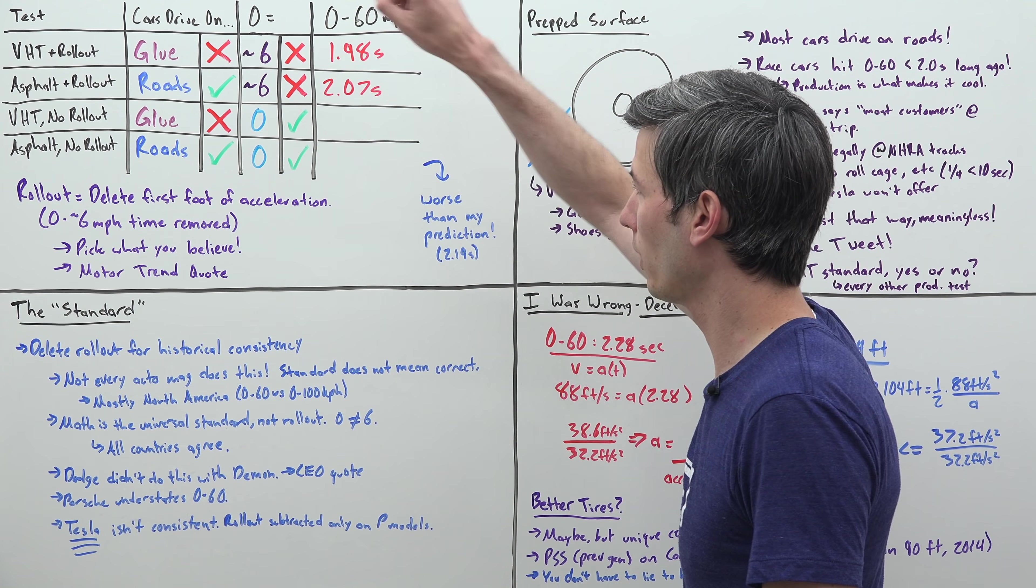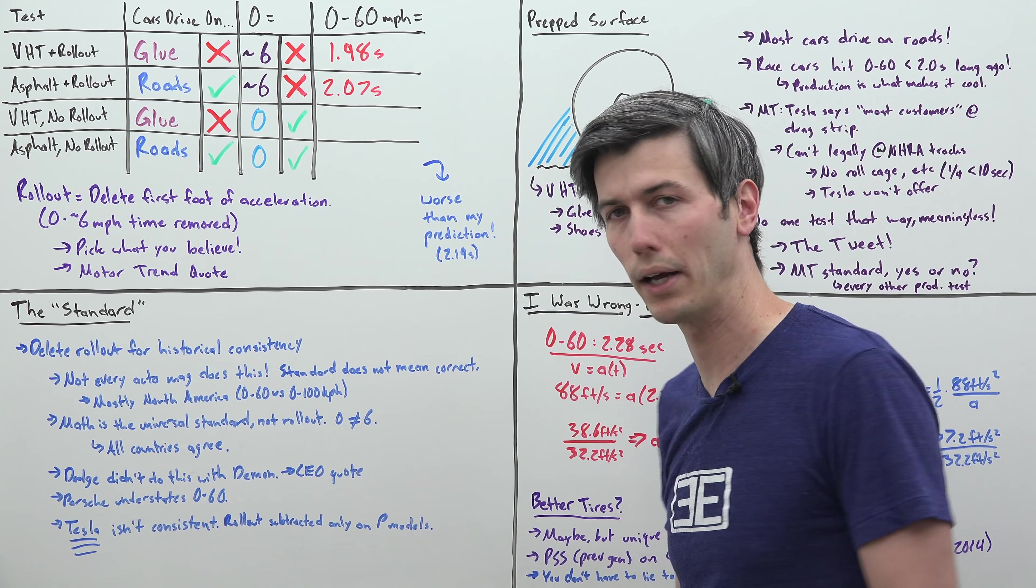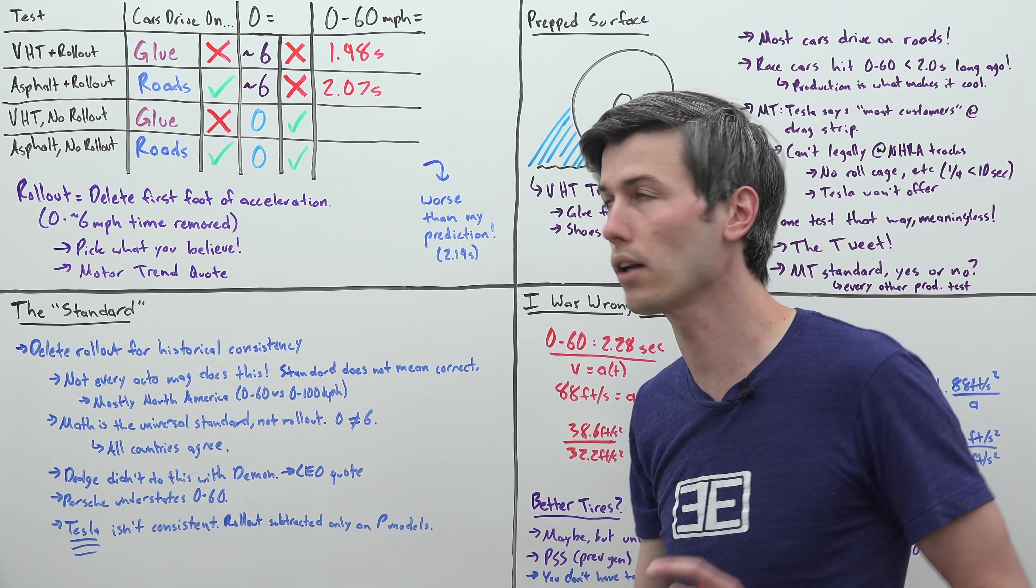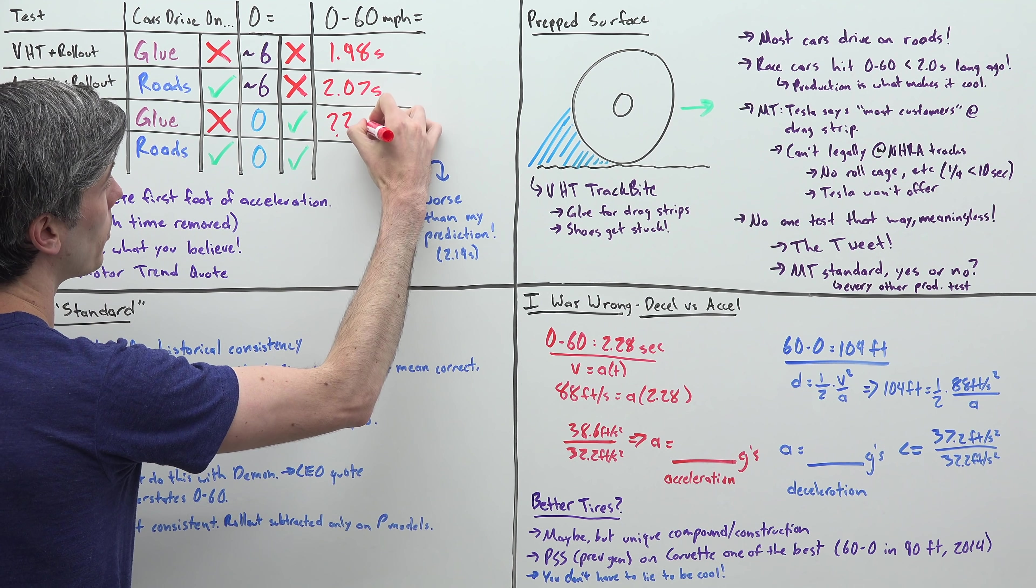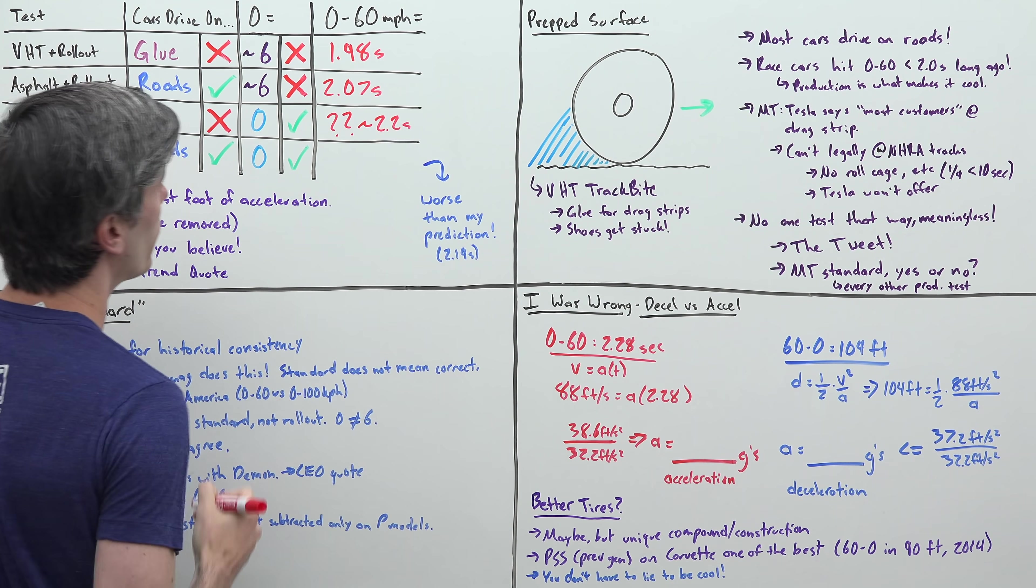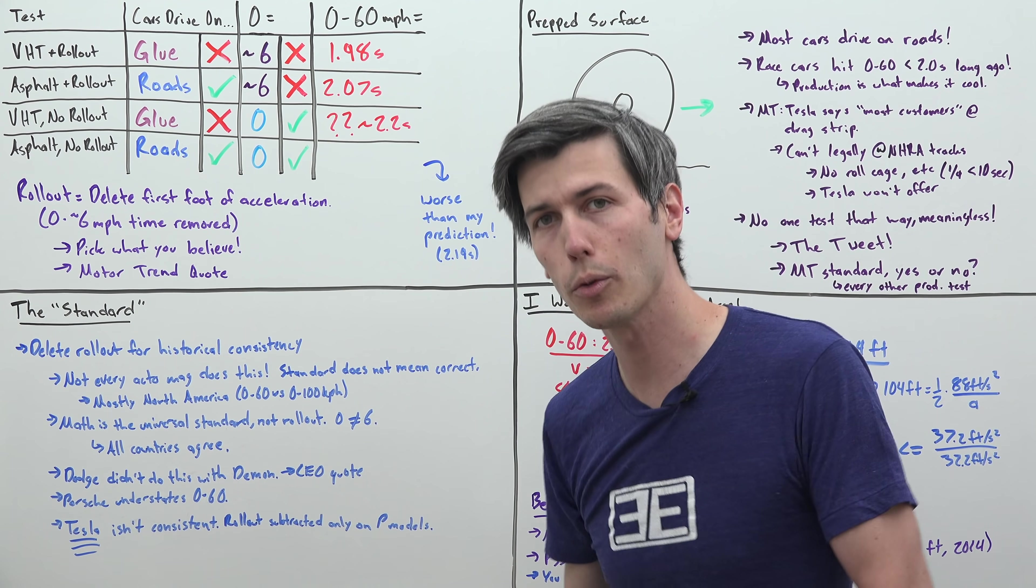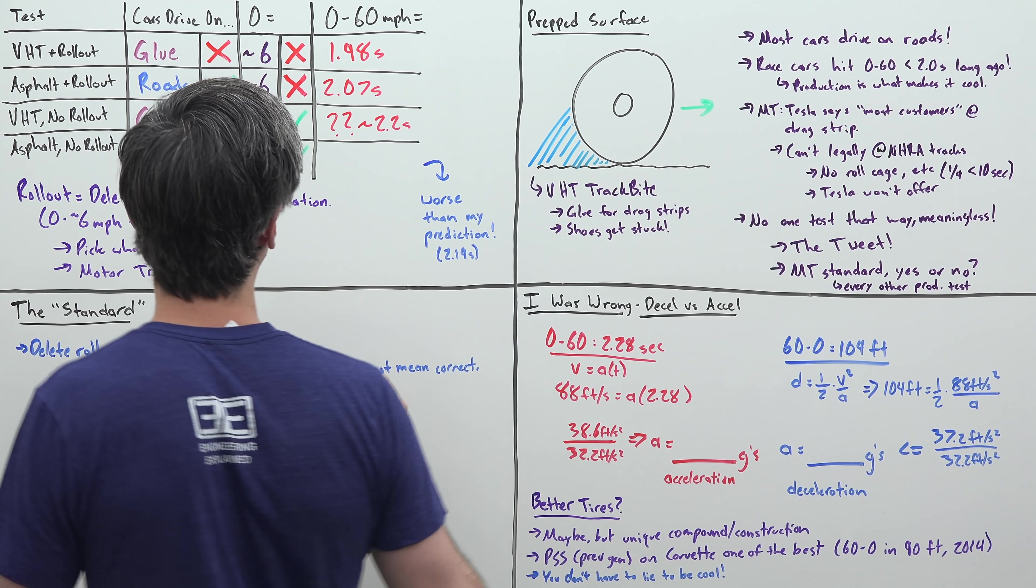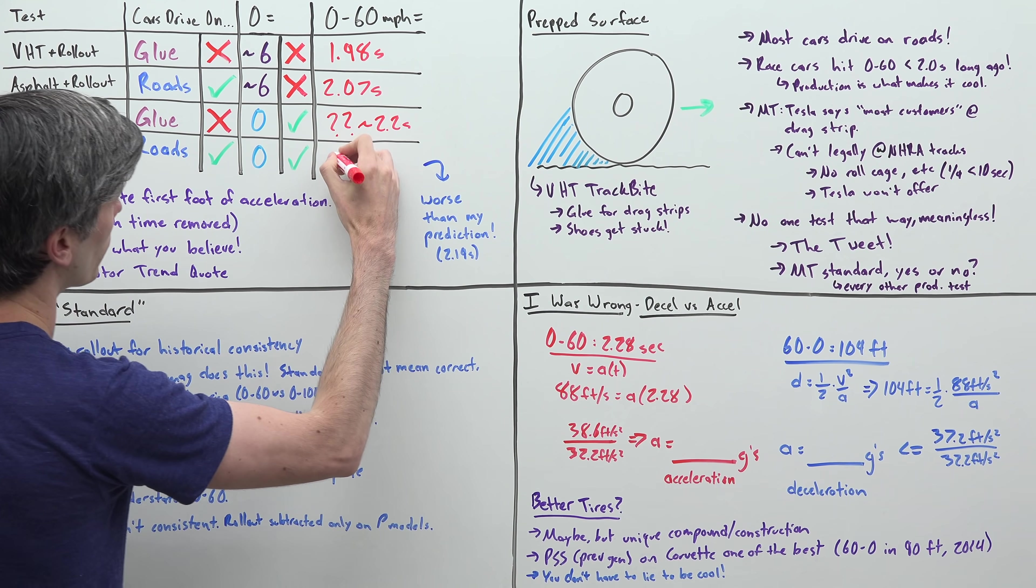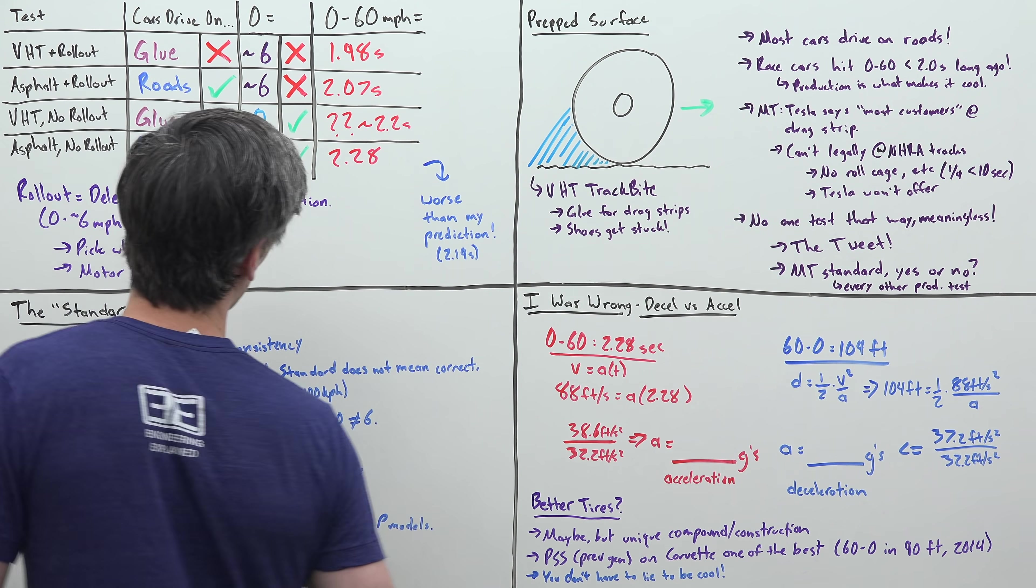If you believe 0 equals 0 but cars drive on glue, we don't know what that number is yet. Motor Trend hasn't given it out yet but it'll probably be somewhere in about the 2.2 second range. If you do believe that cars drive on roads and you believe that 0 equals 0, then the actual 0 to 60 time that this Tesla Model S Plaid achieved was 2.28 seconds.